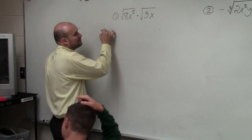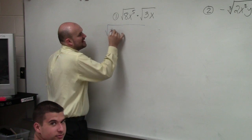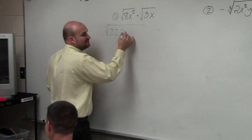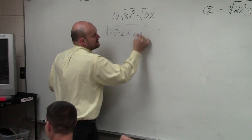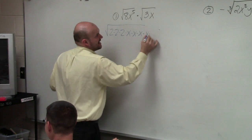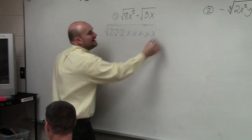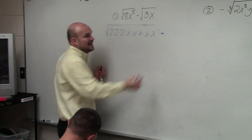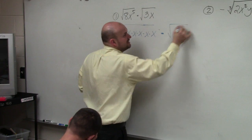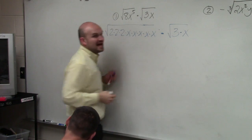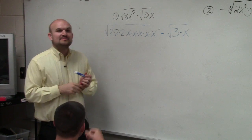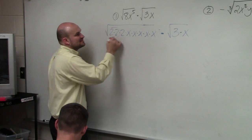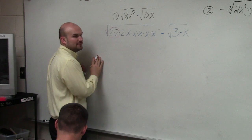So I can break down 8 as 2 times 2 times 2. I can break down x to the fifth as x times x times x times x times x. Now I cannot break down the square root of 3x, so I'm just going to leave that as 3 times x. When breaking them down, basically what you're doing is finding groups — pairs of numbers.